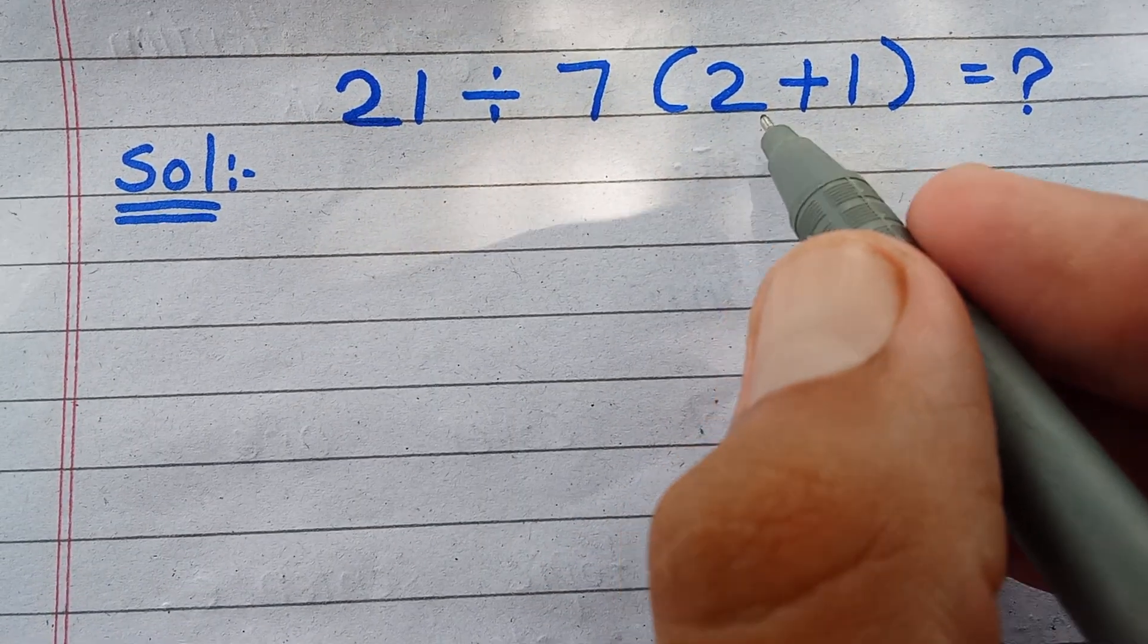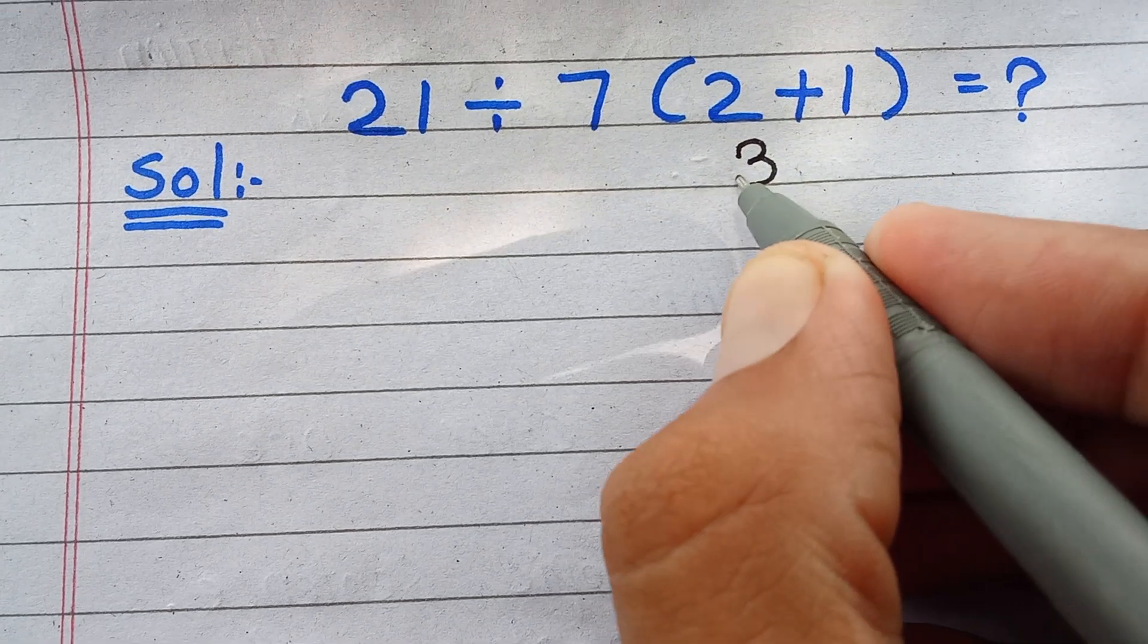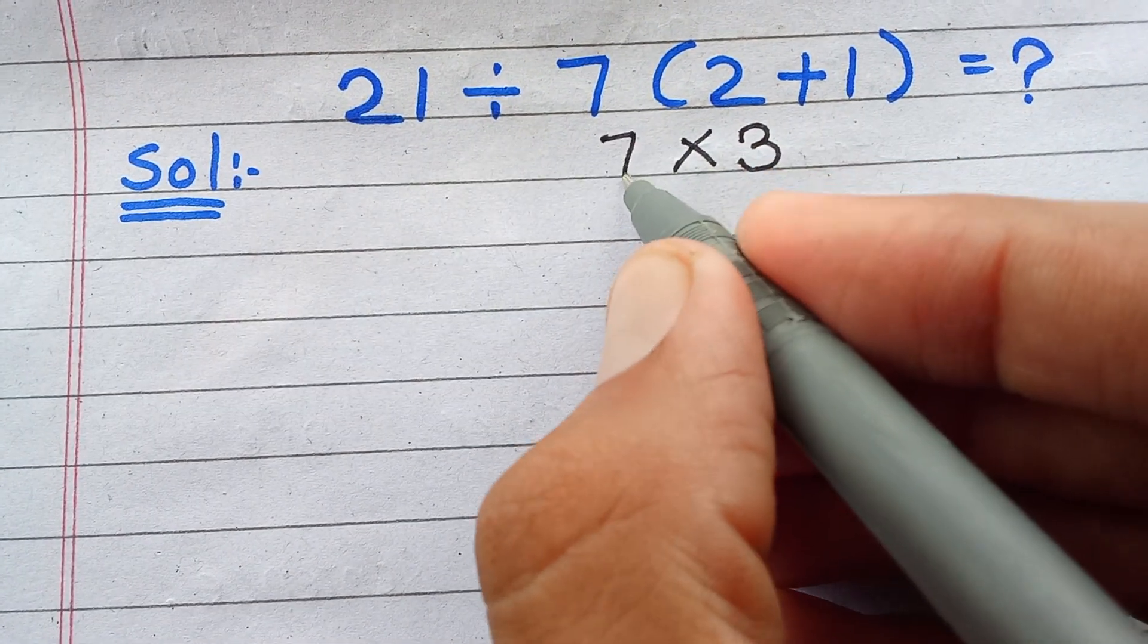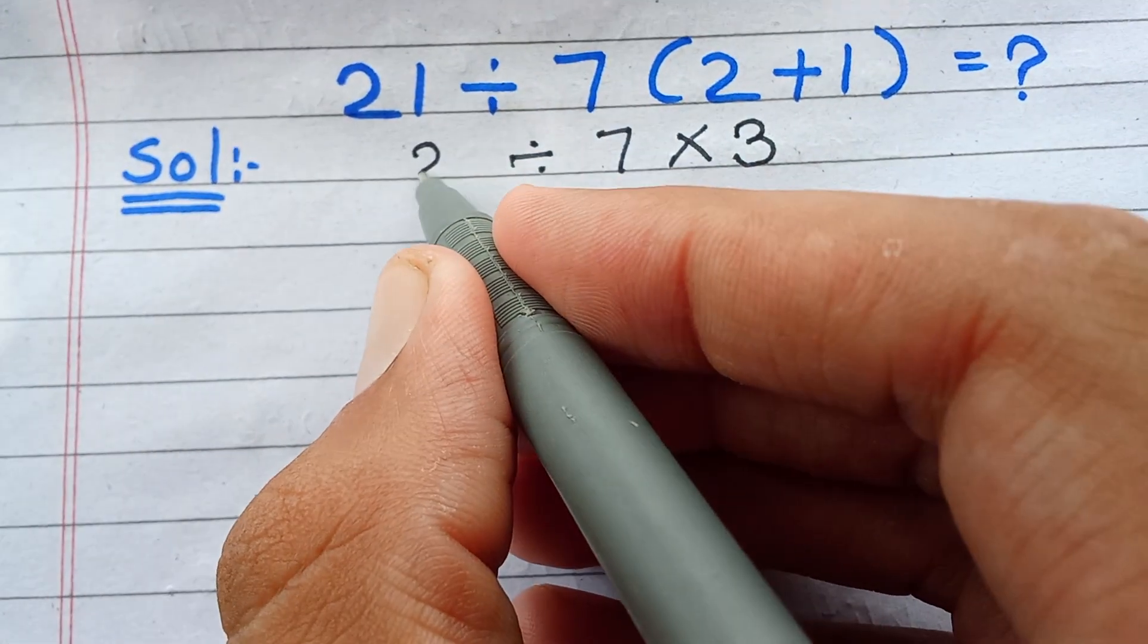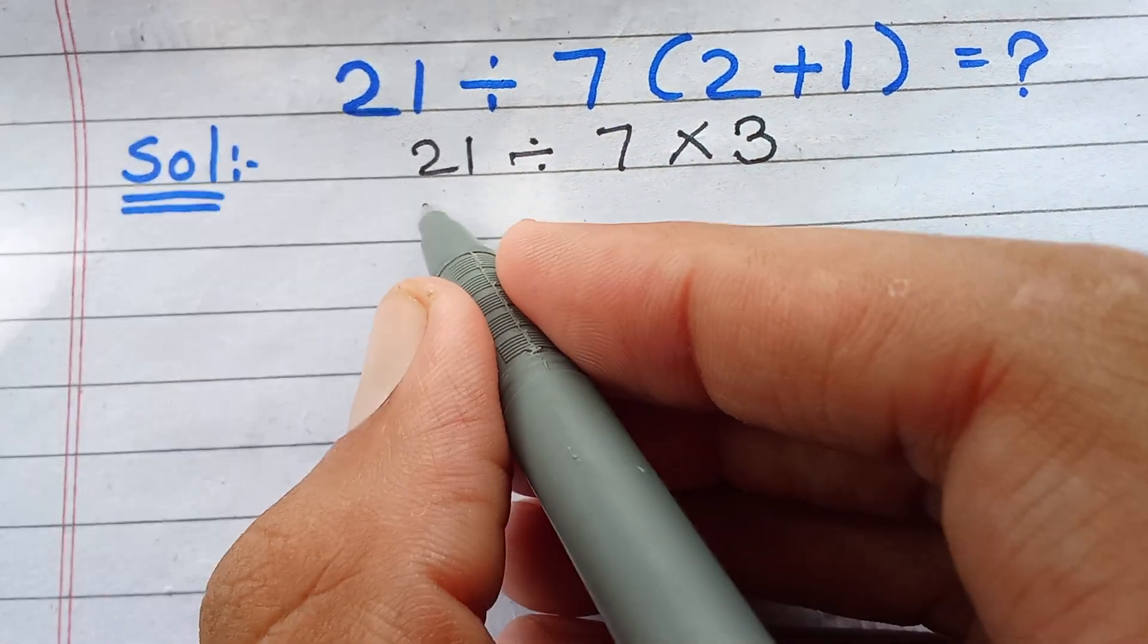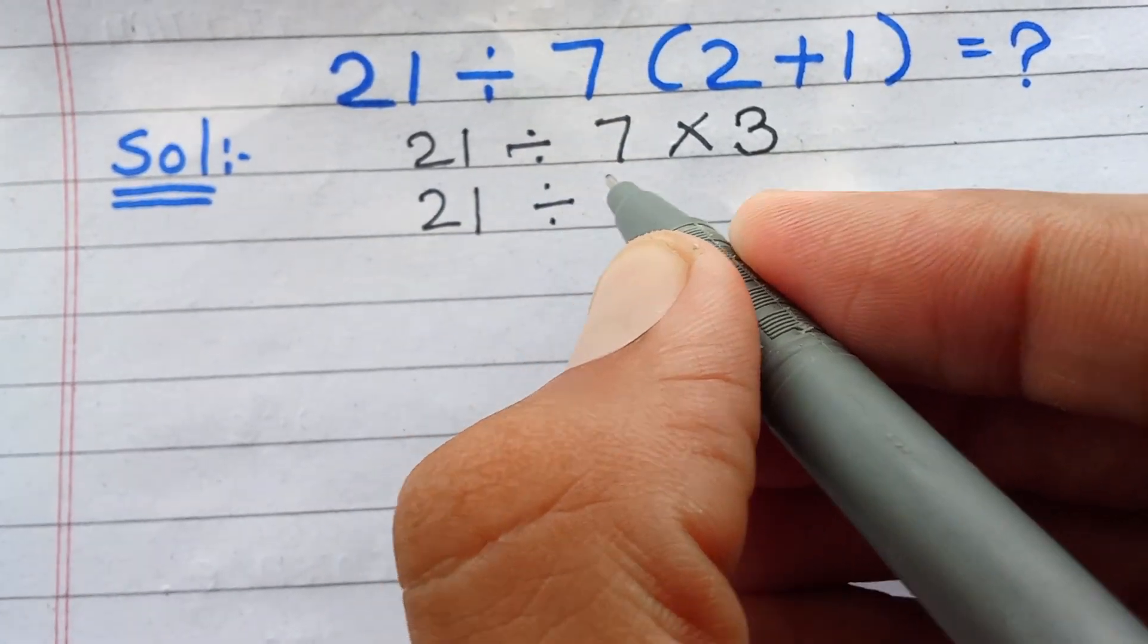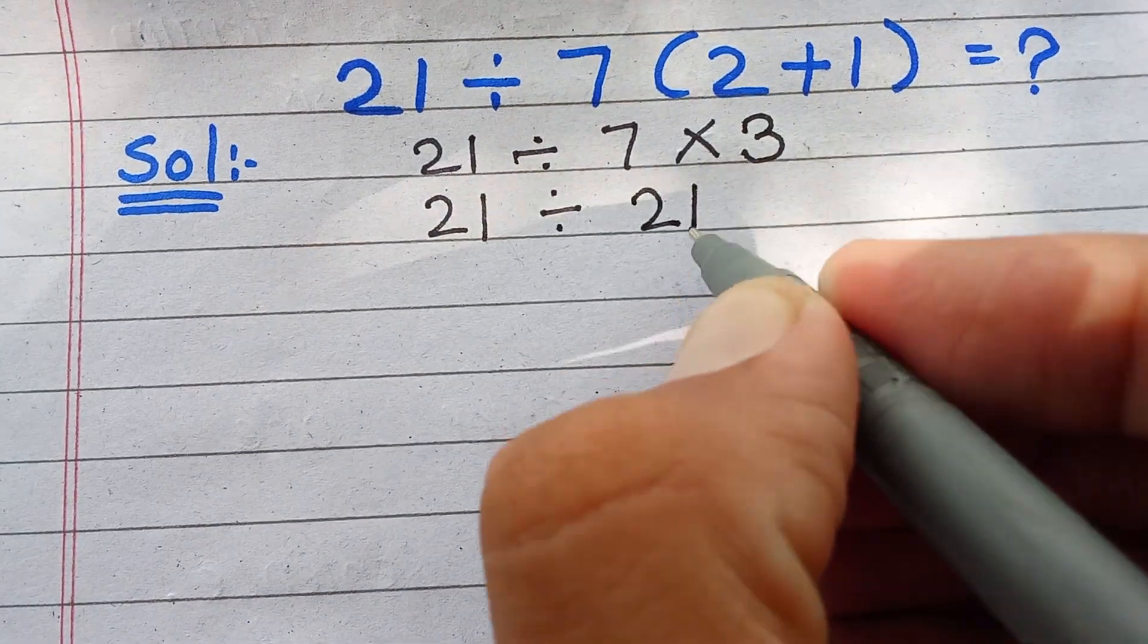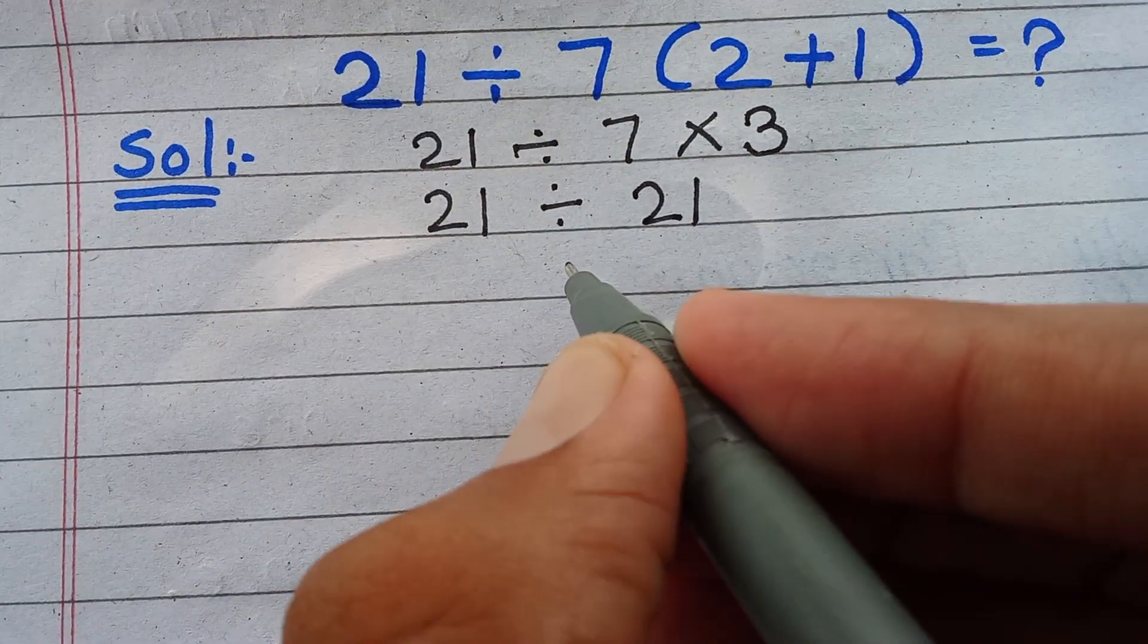Most people make this mistake: 2+1 equals 3, times 7, divided by 21. So 21 divided by 7 times 3, which equals 21. Then 21 divided by 21, which equals 1.